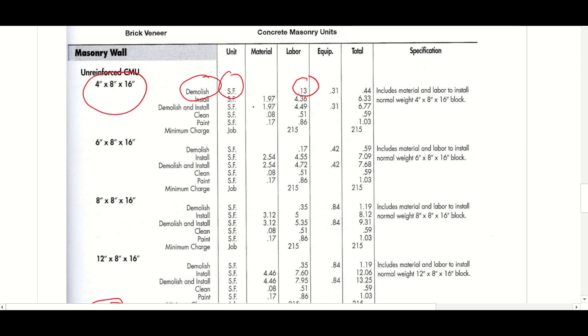The rest of this chart is going to follow just like everything else we've done. Choose the size of the material you're using. So there's several sizes of CMU blocks you can use. Within each one, you're going to work within this table. How many square feet is the wall? You need to decide if you're doing demolish, install, or both.